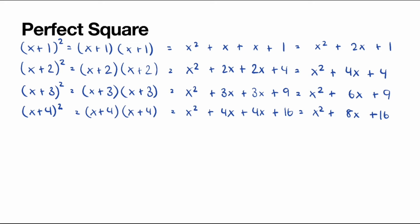For x plus 2 squared, we have x squared plus 4x, and the 4 is 2 times 2. For x plus 3 squared, we have x squared plus 6x, and the 6 is 3 times 2. And similarly, for x plus 4 squared, we have x squared plus 8x, and the 8 is 4 times 2. How about the number at the end? We have 1, 4, 9, and 16. If you look carefully, 1 is 1 squared, 4 is 2 squared, 9 is 3 squared, and 16 is 4 squared — so it's the square of the number inside the bracket.